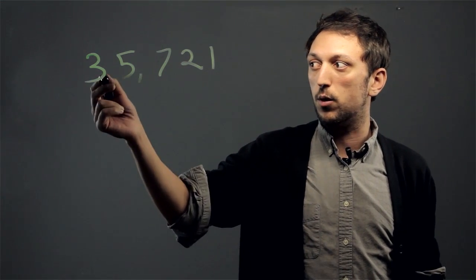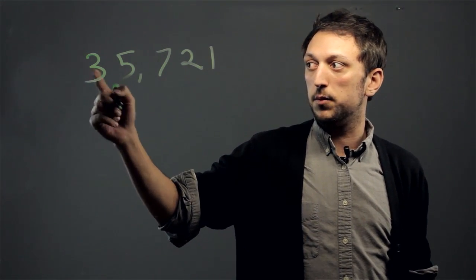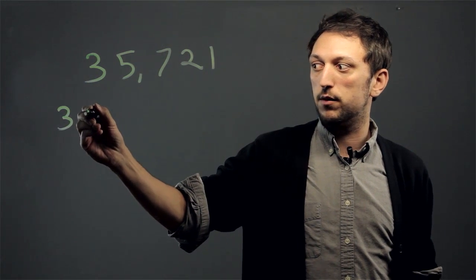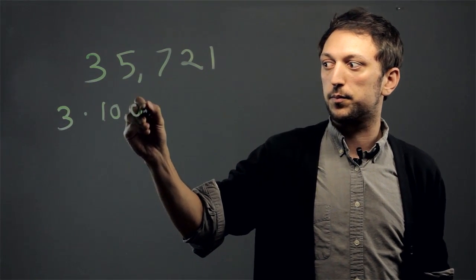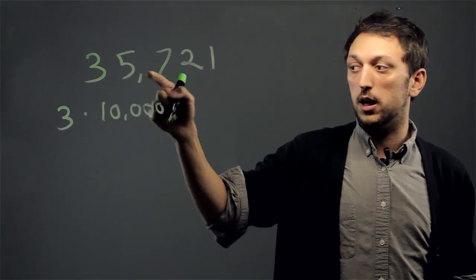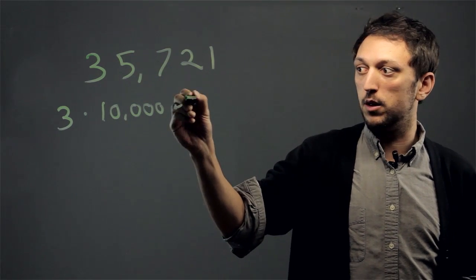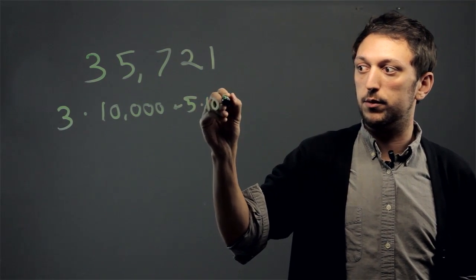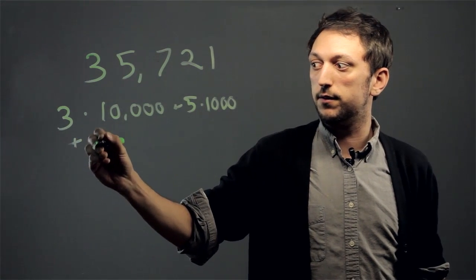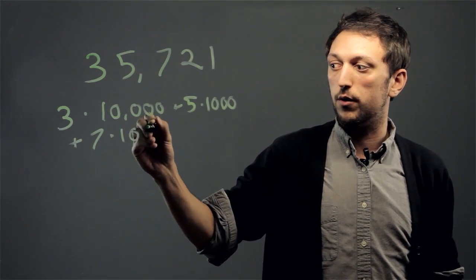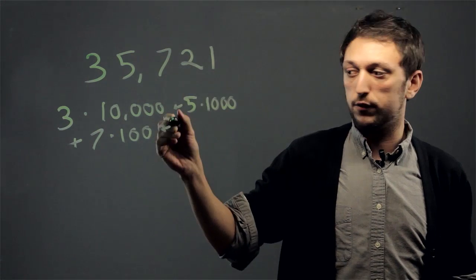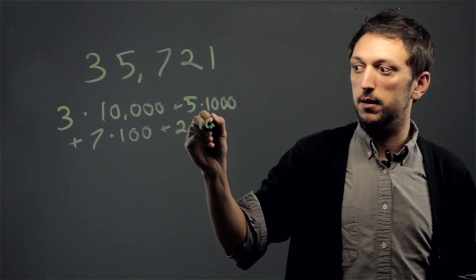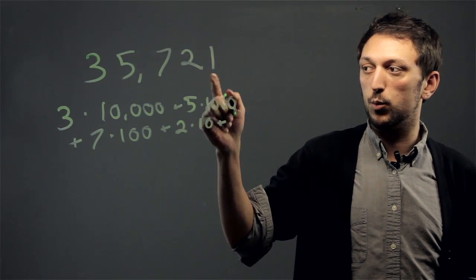So, to express this number in expanded form, three is really three times ten thousand, plus five times one thousand, plus seven times one hundred, plus two times ten, plus one times one.